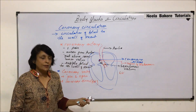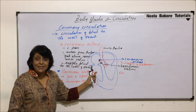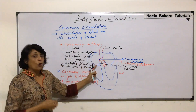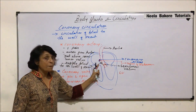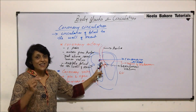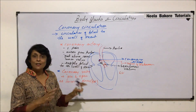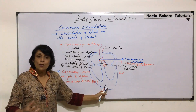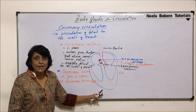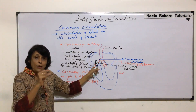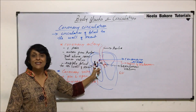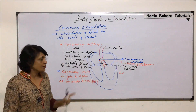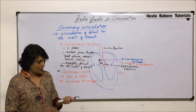The coronary sinus has valves known as the valves of Thebesian. So to summarize: coronary arteries, a pair of them, arise from the aorta just above the semilunar wall, divide into branches supplying blood to the wall. Coronary veins collect the blood and open into the right atrium through the coronary sinus, whose opening is guarded by the valve of Thebesian. This is coronary circulation.